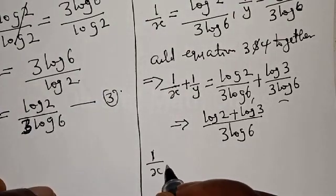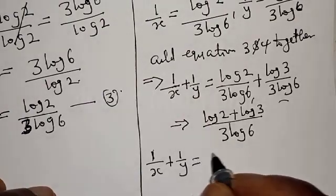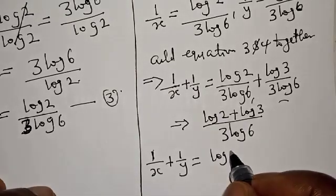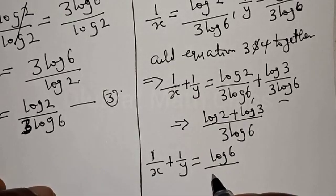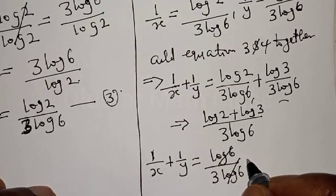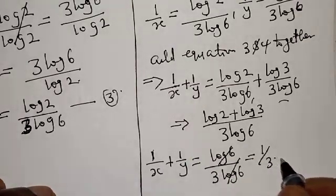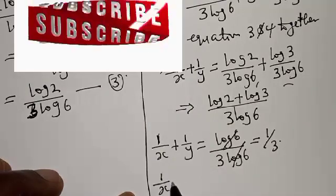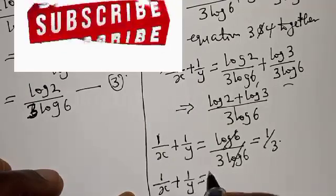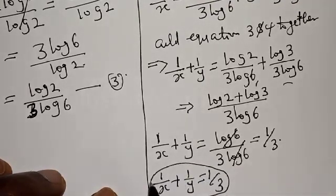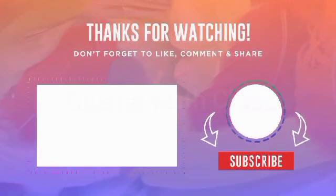So 1 over s plus 1 over y equals log 6 over 3 log 6. The log 6 cancels, which gives us 1 over 3. Therefore our final answer is 1 over s plus 1 over y equals 1 over 3. Please don't forget to like, share, comment and subscribe. Thank you.